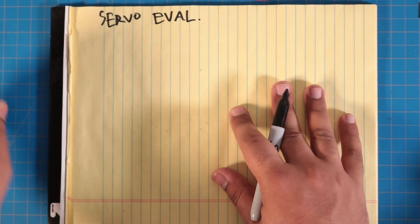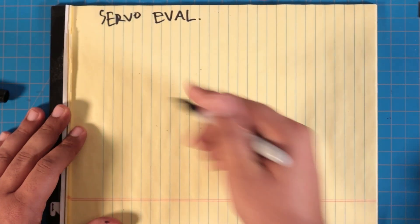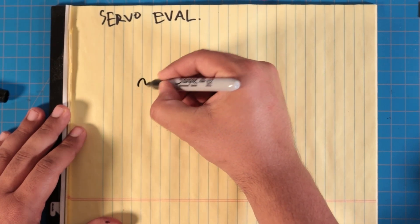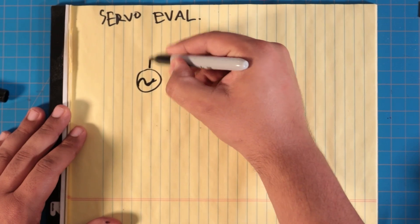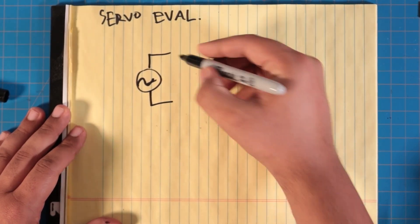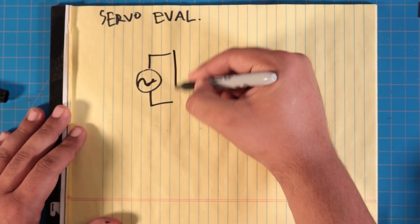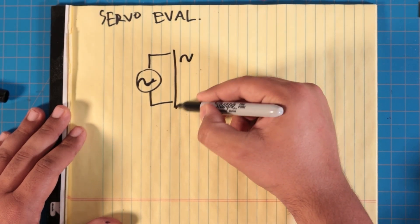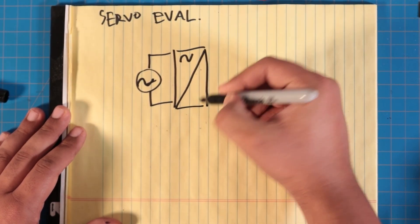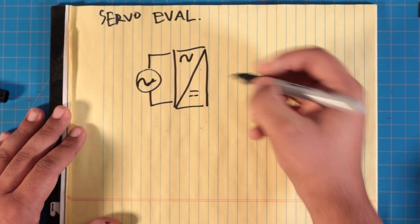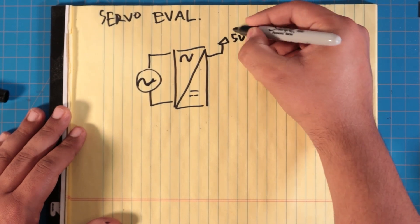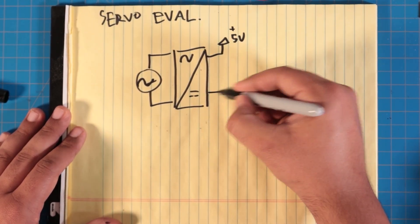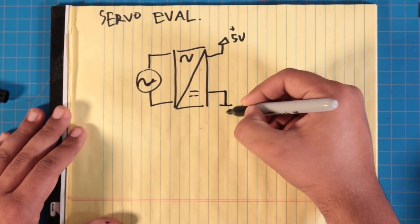Let's walk through the schematic for this servo evaluator. First things first, we've got our AC source coming in. We've got our AC to DC converter. It's kind of a weird way to draw that. Don't judge me. Now we've got our 5 volts, plus 5 volts, because it goes above the 5, naturally.